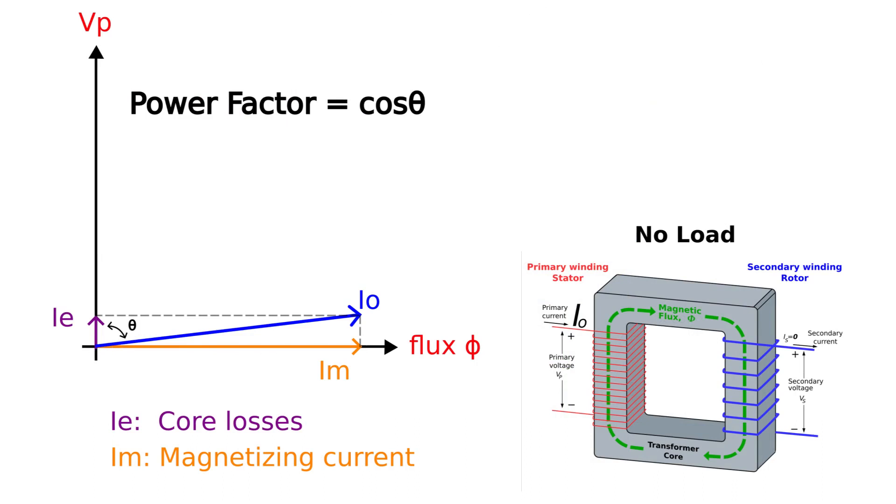So, in this case, IM will be much bigger than IE, and the power factor, which is cosine theta, will be close to zero, since theta will be close to 90 degrees.